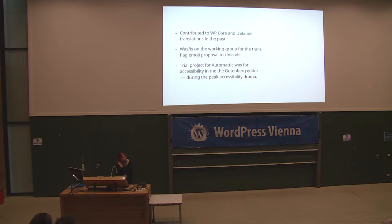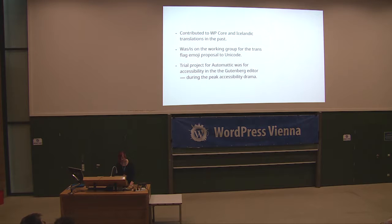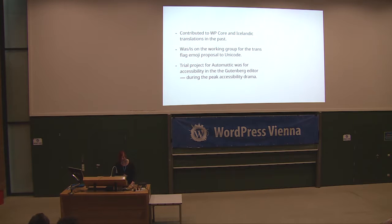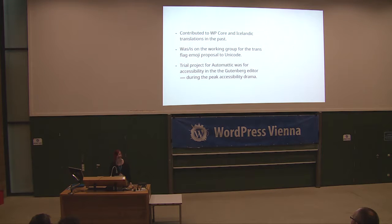In the past I've contributed to WordPress core and the Icelandic translation — which has unfortunately stagnated. I'm currently on the working group for the trans flag emoji proposal to the Unicode Consortium. If you want to experience strange politics, get the silent treatment for 14 months, and general ignorance, I really recommend doing some work for Unicode. One of the steps toward working full-time at Automattic was a trial project supposed to take about a month — they saw my resume, noted my accessibility interest, and said come work on the Gutenberg editor because people are complaining about accessibility.